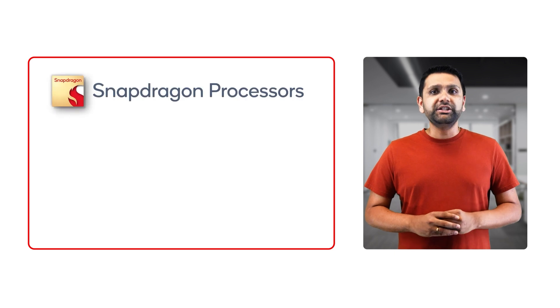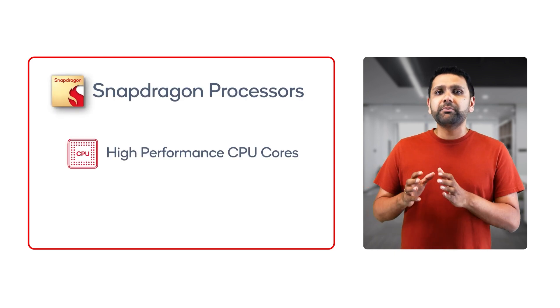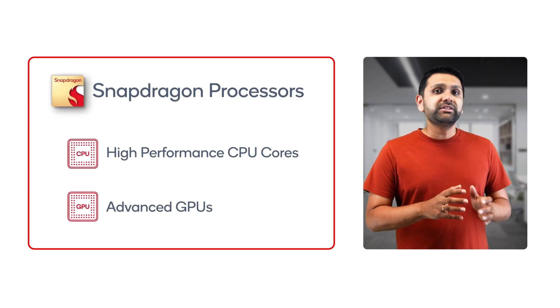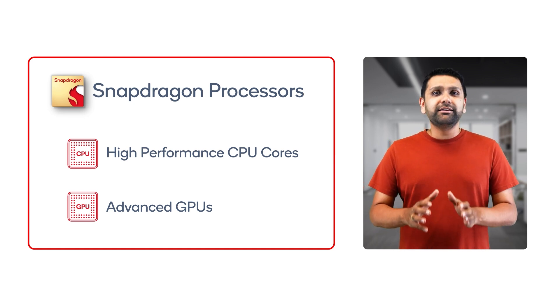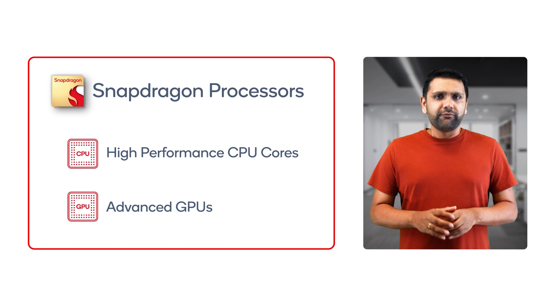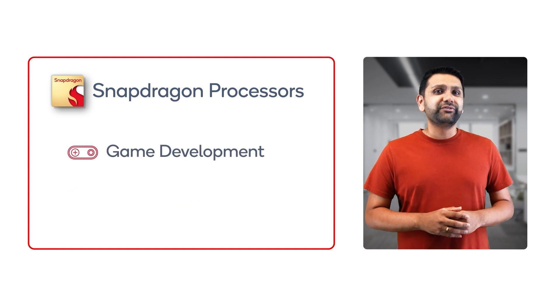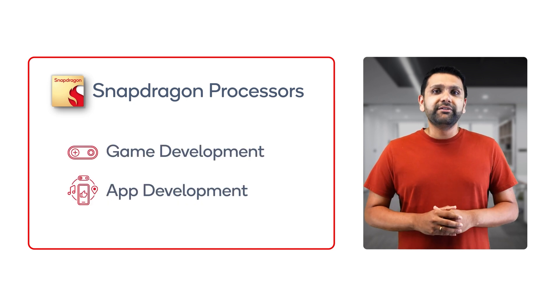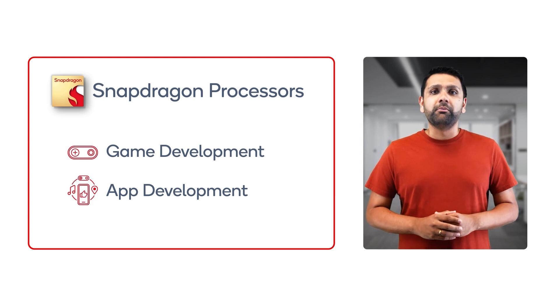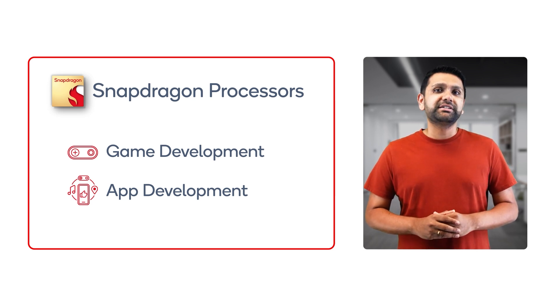Let's kick things off by looking at the raw power Windows on Snapdragon leverages from Qualcomm's cutting-edge Snapdragon processors. These processors are engineered with multiple high-performance CPU cores and advanced GPUs. As a developer, this means unparalleled computing capabilities at your fingertips. Whether you're developing resource-intensive games or applications, Windows on Snapdragon delivers the performance you need to successfully perform such highly demanding computational tasks.